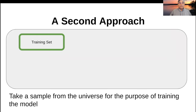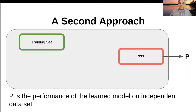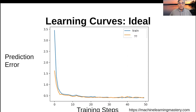A second approach is that instead of accessing the entire universe, we sample a subset for training purposes — indicated here by the green box. We can also access a separate data set that is statistically independent from the training set; I'll term that the test set. Once we've constructed a model based on the training set, we can present the model with this independent data set and ask what the performance is. Many learning algorithms are incremental in nature, such as the gradient descent kinds of algorithms we use for nonlinear models. The ideal type of performance out of a training set looks like this.